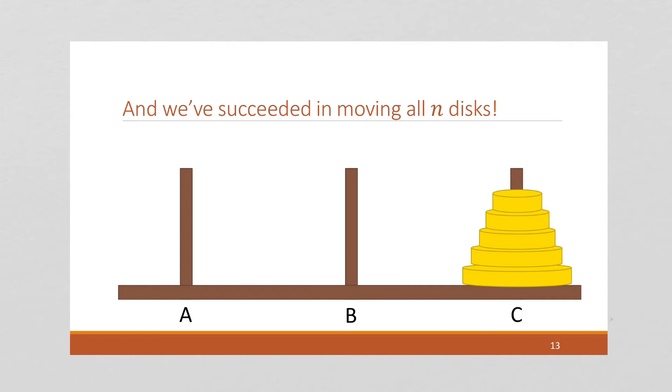So we've solved the problem for n disks. And you might want to think about what's the extreme case? What's sort of the base case? If n is 1, how many moves does it take? Well, if you just have a single disk down here, you can move it directly in a single move. So when n equals 1, this is going to only take one move.